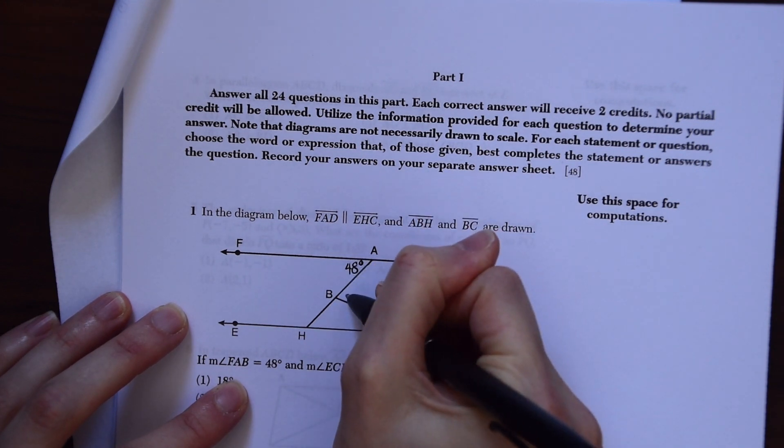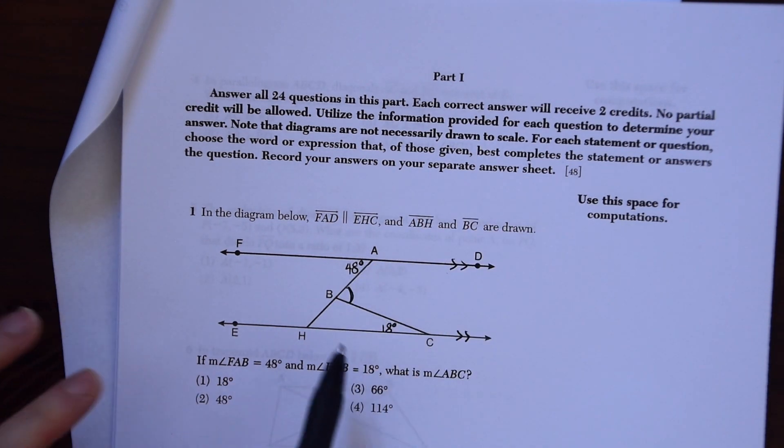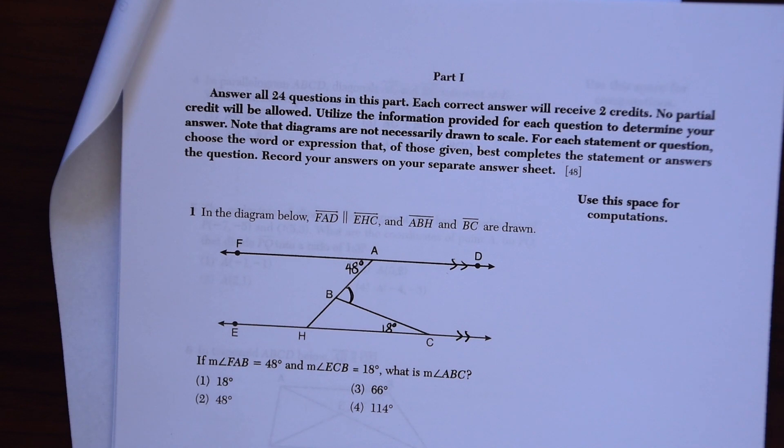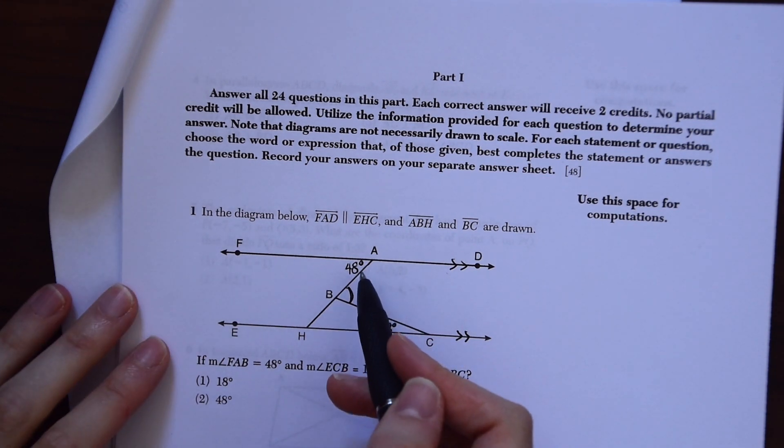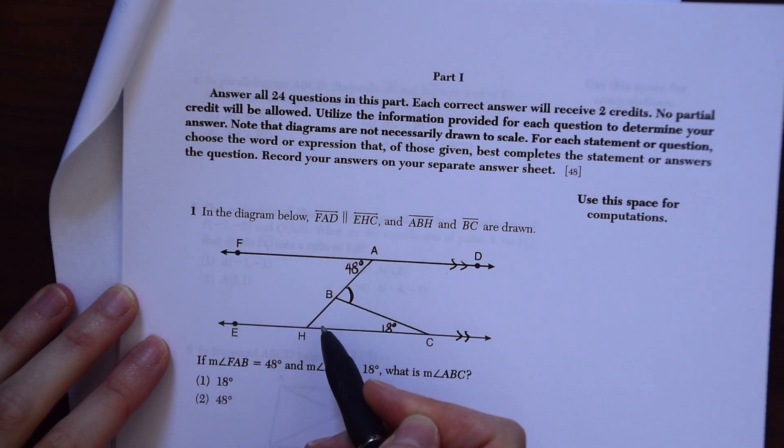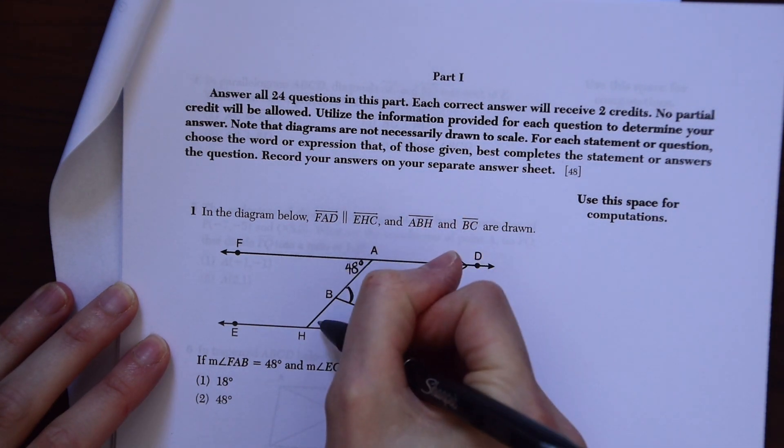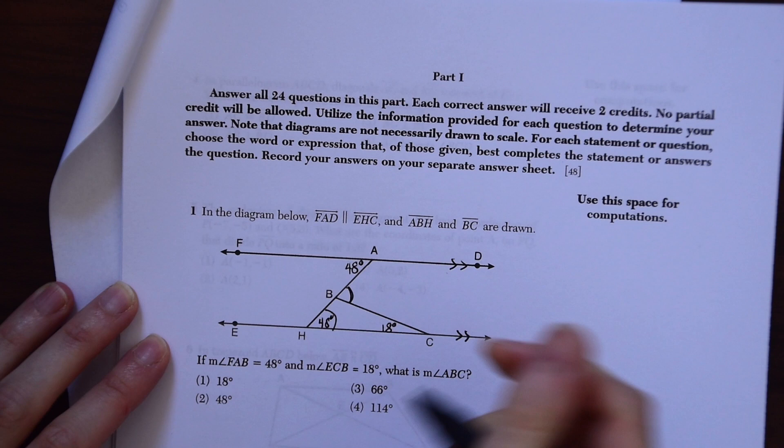So we want to know this angle right here and we're given this other information. So because this forms a transversal, right away we can see the alternate interior angles. 48 is given, so this is also 48 degrees because of those alternate interior angles.